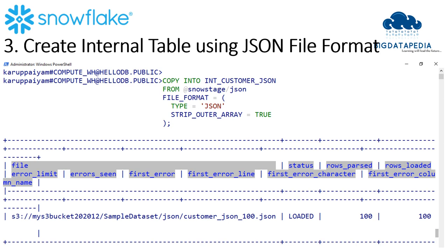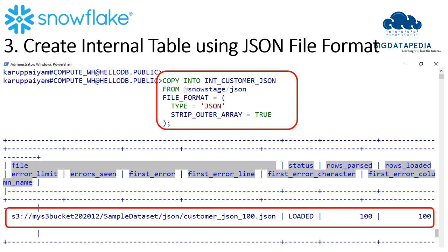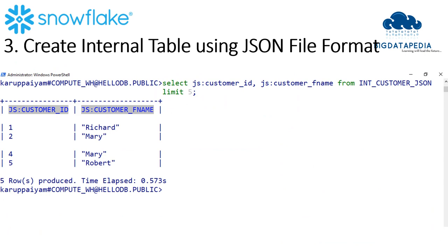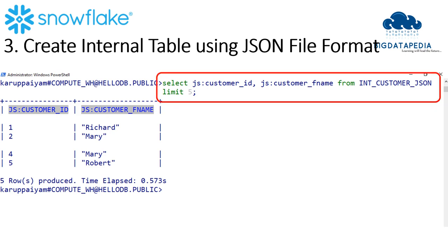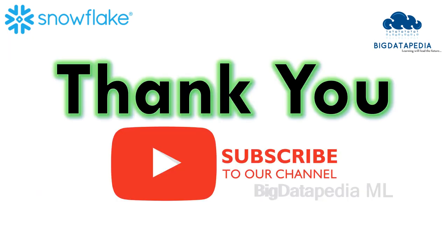Next, we load JSON data into the table using the COPY command: COPY INTO table_name FROM @stage/directory with FILE FORMAT type as JSON and STRIP_OUTER_ARRAY as TRUE. If you enable this, nested JSON data will be accessible. Once the command executes, the data is properly loaded — 100% load confirmed. You can then run SELECT with the VARIANT data type using colon notation, for example: SELECT json_col:column_name FROM table LIMIT some_value, and you can see the data properly.